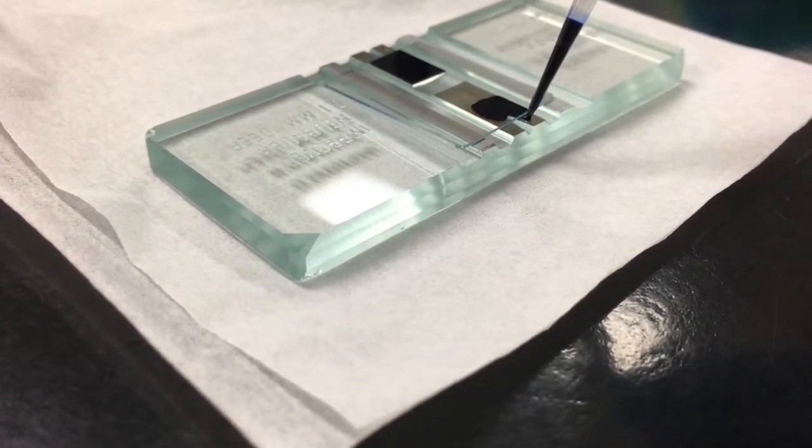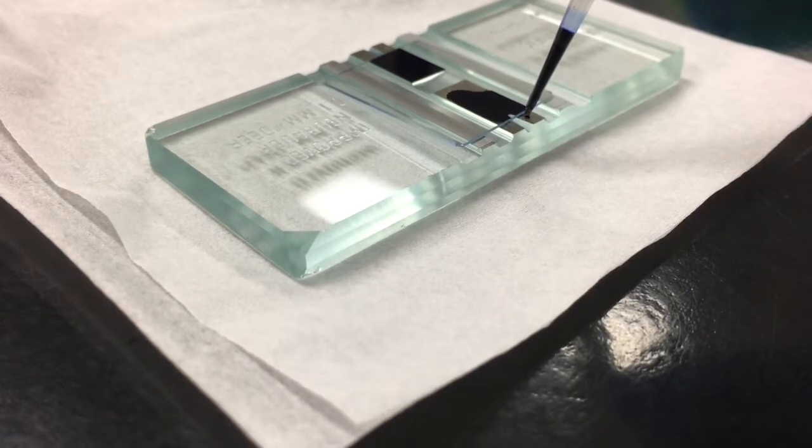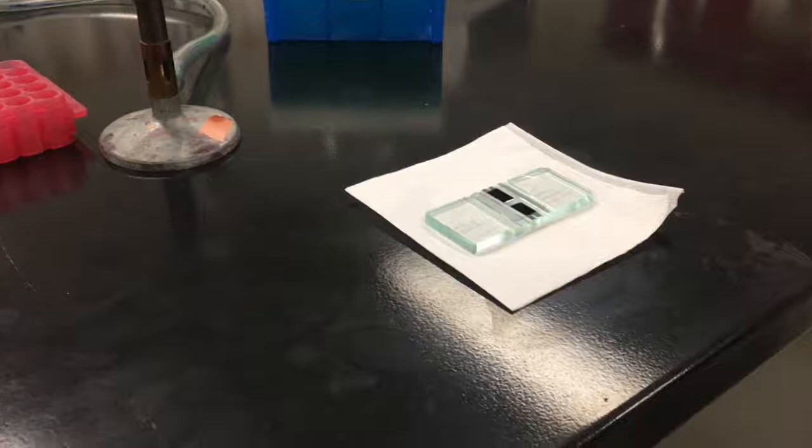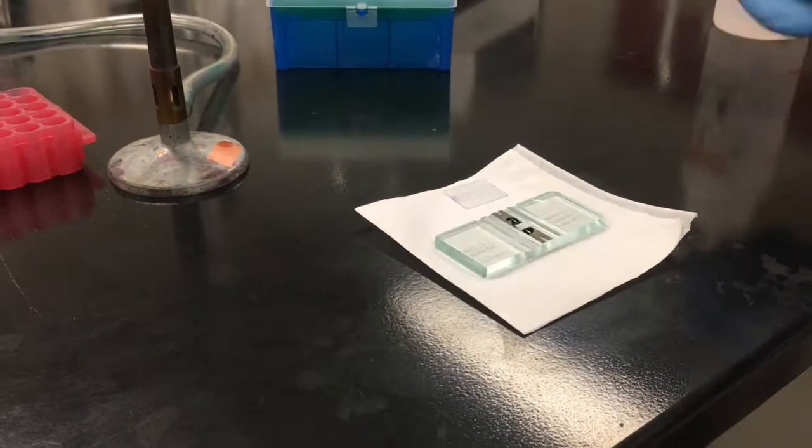Load both sides of the hemocytometer as you will be counting cells in both chambers. Your hemocytometer can be viewed under the 10x or 40x objectives of your microscope for counting.